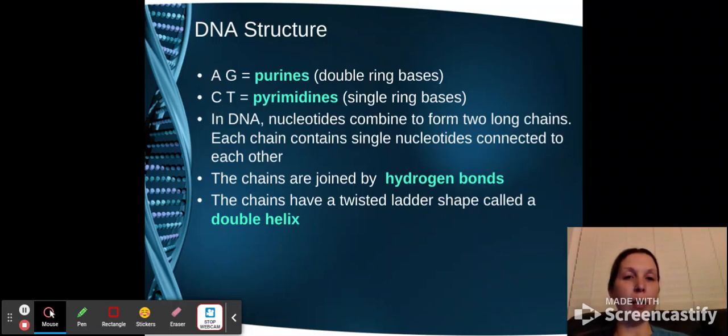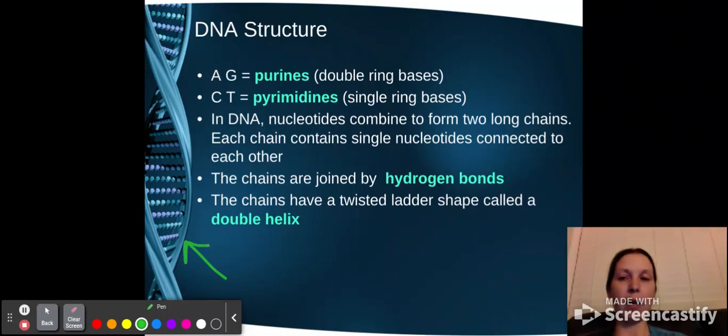In DNA, the nucleotides will combine to form two long chains, and each chain contains a single nucleotide connected to each other. These chains are joined by what are called hydrogen bonds, which were mentioned way back when we also talked about the properties of water. This is really pulling in information from unit two. The chains have a twisted ladder shape called that double helix, which you can then see over here on the slide itself.